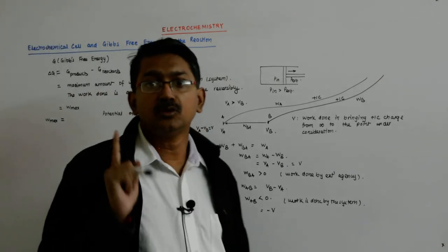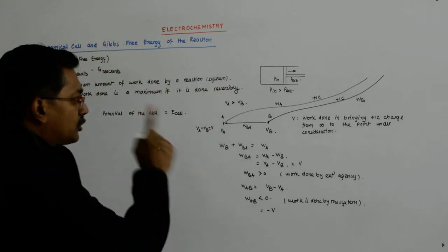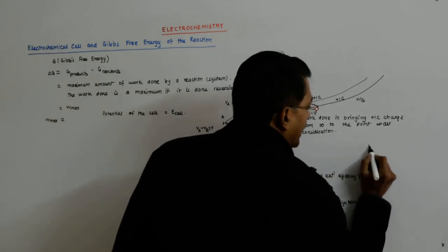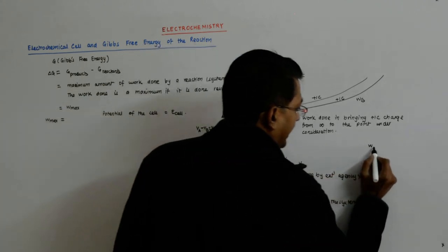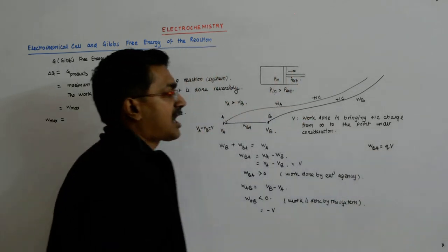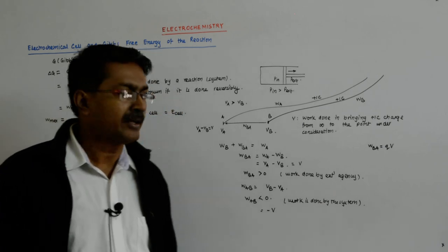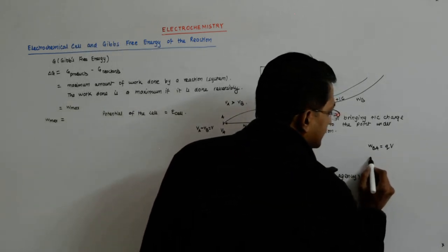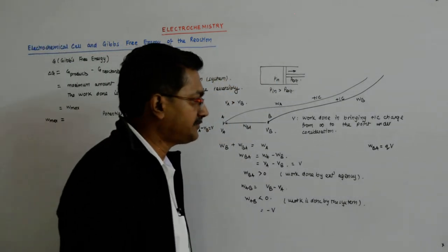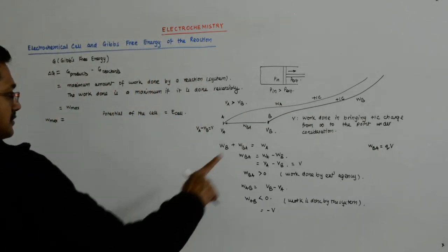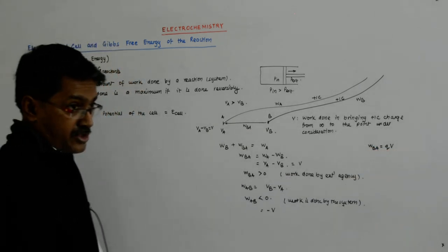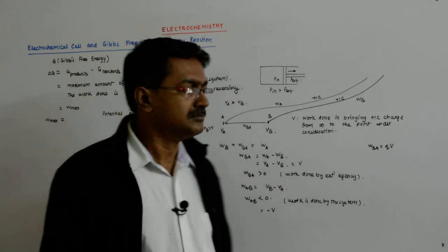This is when you bring in one coulomb. What if you bring in Q coulombs instead? Then the work done W-B-A becomes V multiplied by Q — that is, V multiplied by the charge that you are transferring. So whenever we have the potential difference, that multiplied by the charge you transfer becomes the work done.